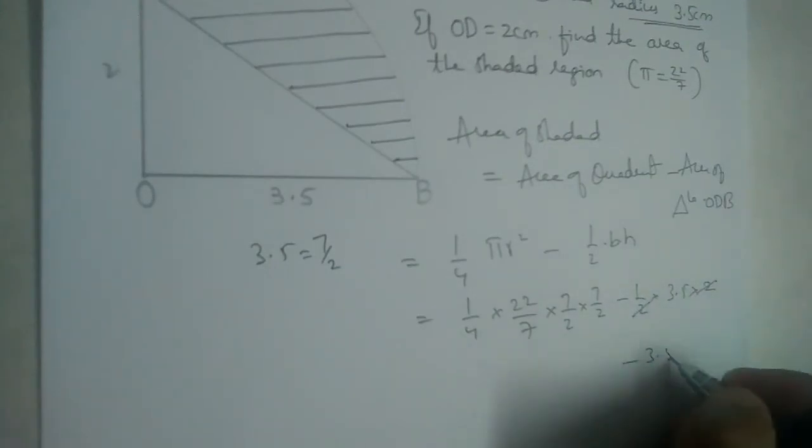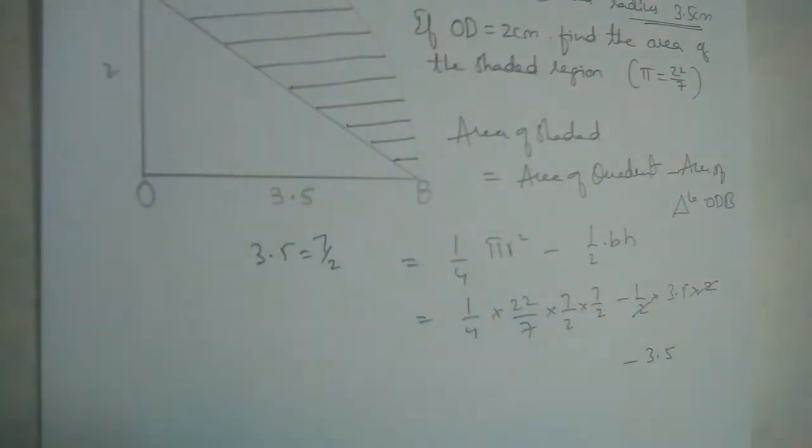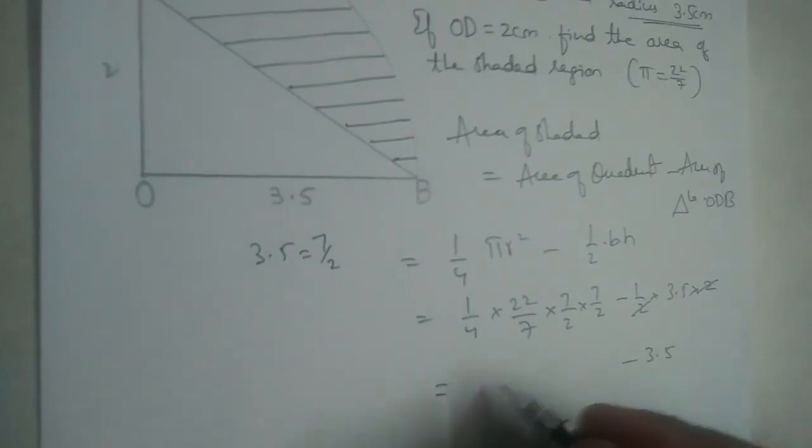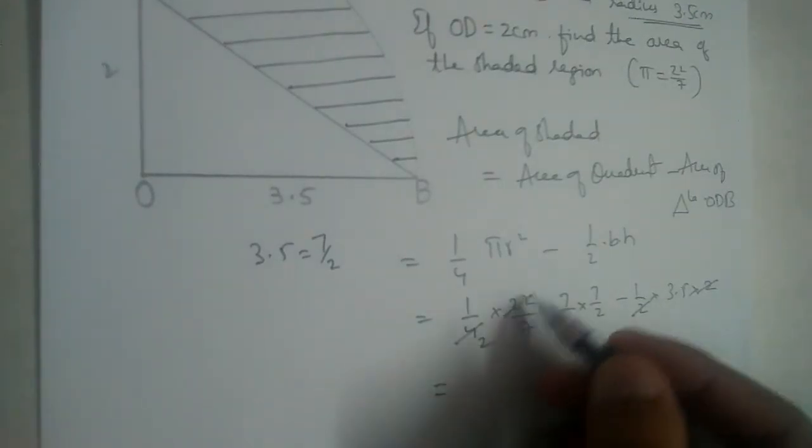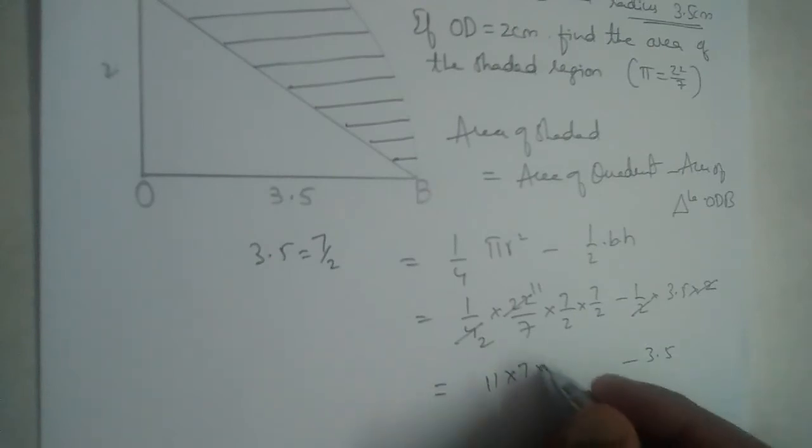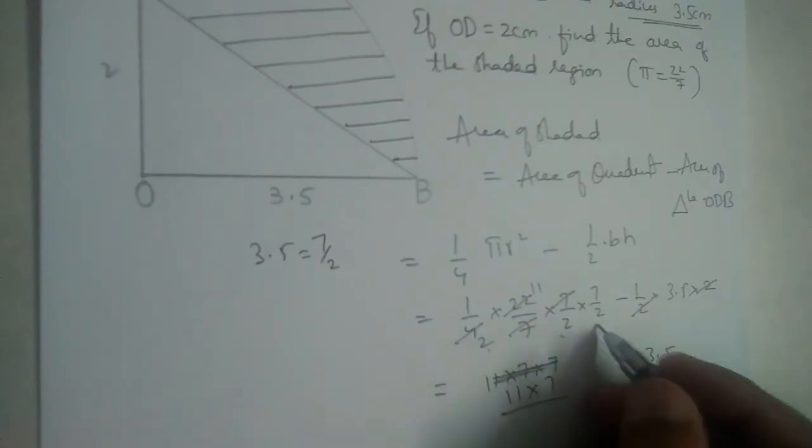So 2 and 2 will get cancelled. The area of this triangle will be 3.5. Now, this is 11 into 7 into 7, and 7 will also get cancelled, right. So this is 11 into 7 by 2 by 8.